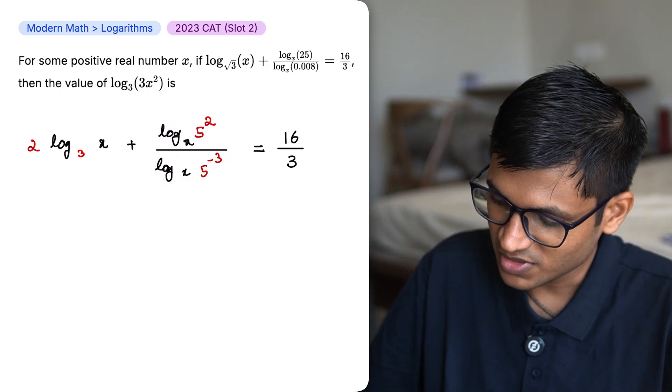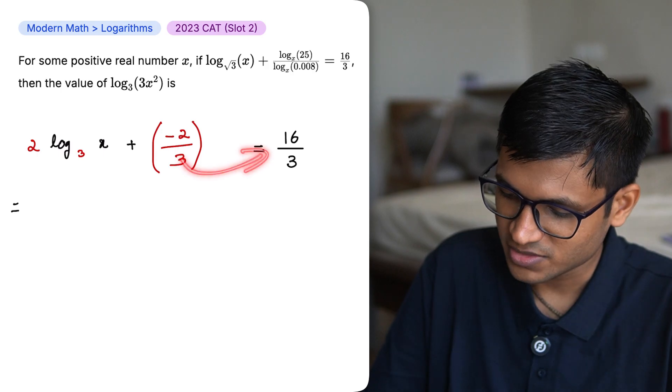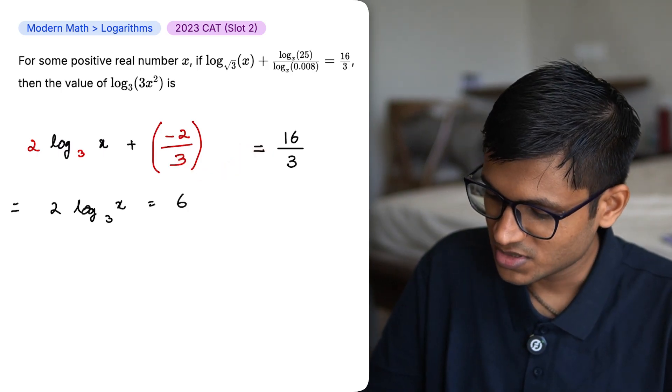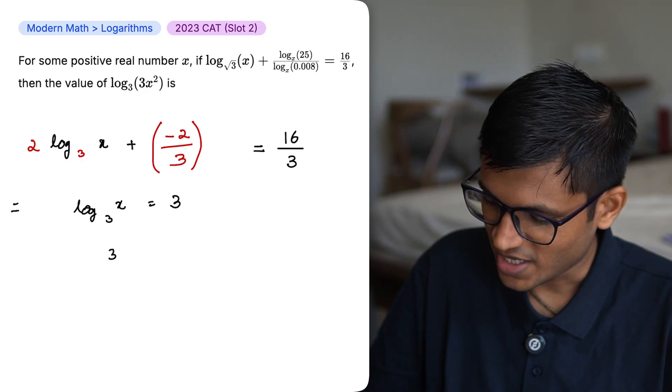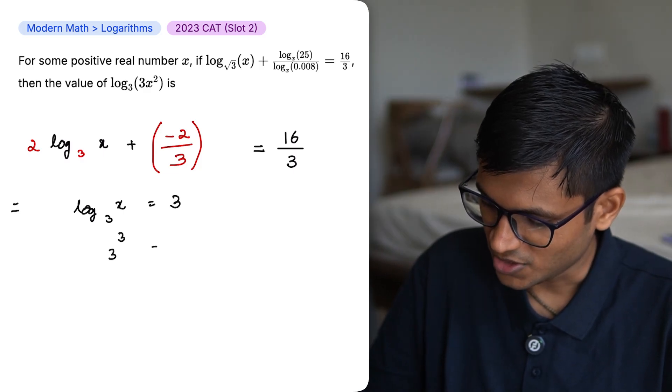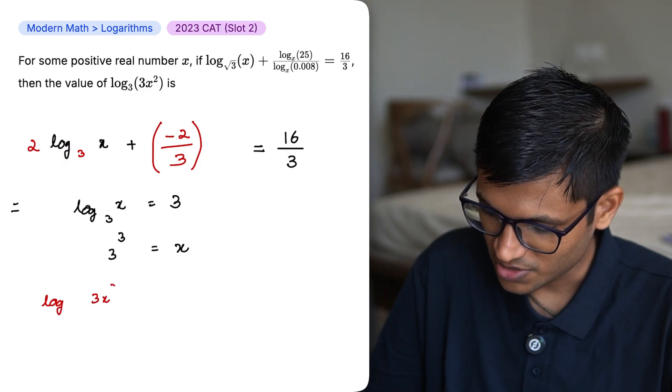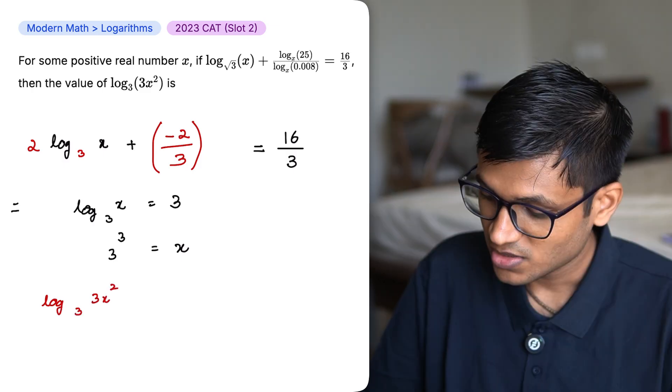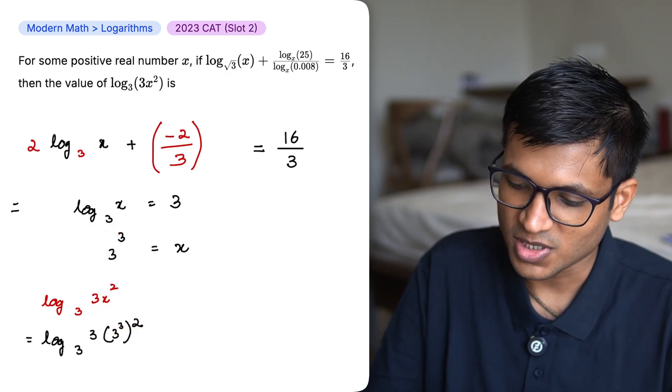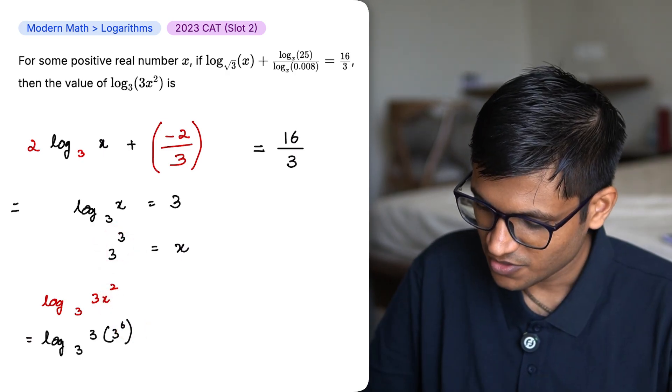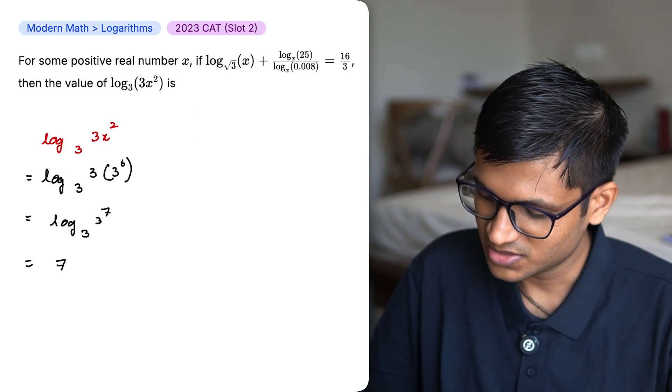In a fraction like this, we can rewrite this entire thing as minus 2 by 3. Sending this to the right hand side, 18 by 3 is nothing but 6 and over here 2 can get cancelled and 6 becomes a 3. And we finally have 3 to the power 3 equals x. The question asks us to find the value of log 3x² base 3. Let's substitute this x with 3 to the power 3. When we have powers like this, we can just multiply them. And finally, we have log 3 to the power 7 base 3. The final answer is 7.